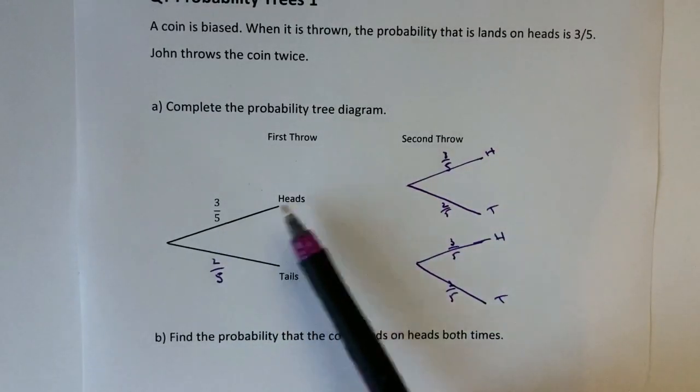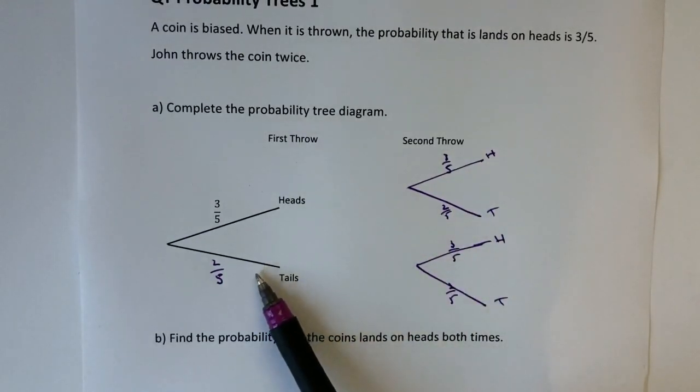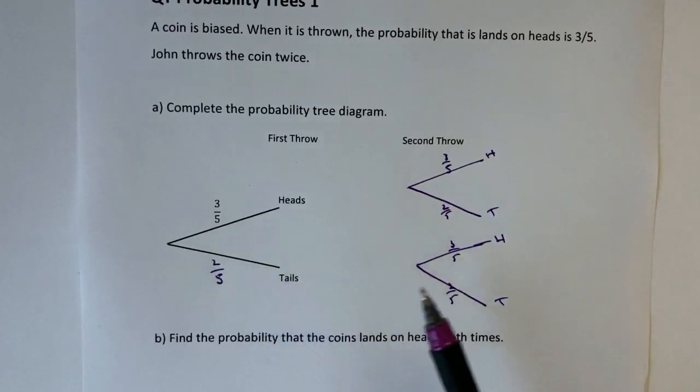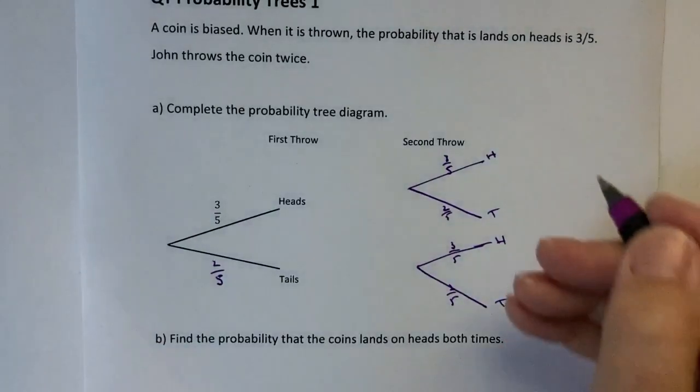So the first outcome is heads and then I've either got a heads or a tails on the second throw. Similarly with this one, the first outcome is a tails, the second throw is either a heads or a tails again. Okay, so therefore I've got now what are called outcomes and outcomes will give me the ability to answer the second part of the question. So let's look at the outcomes.